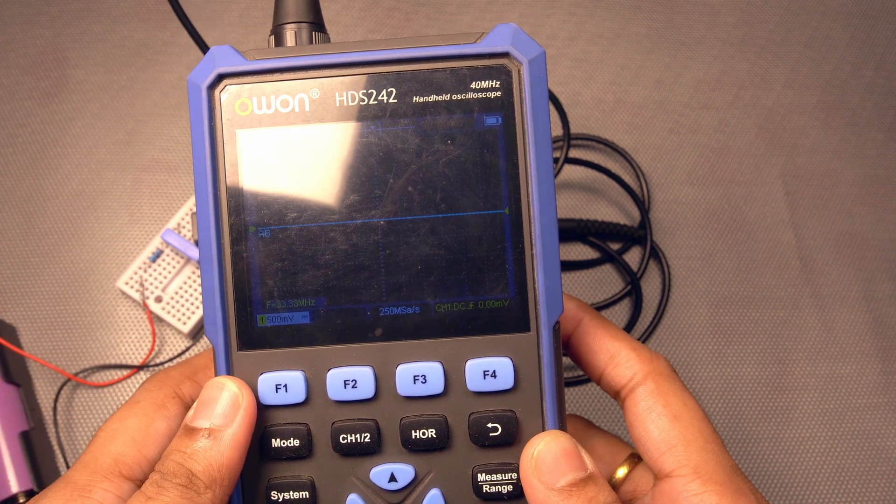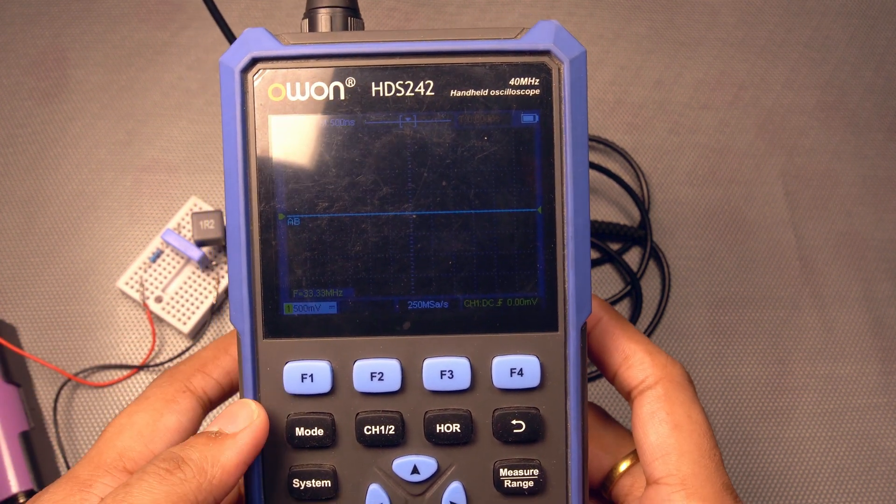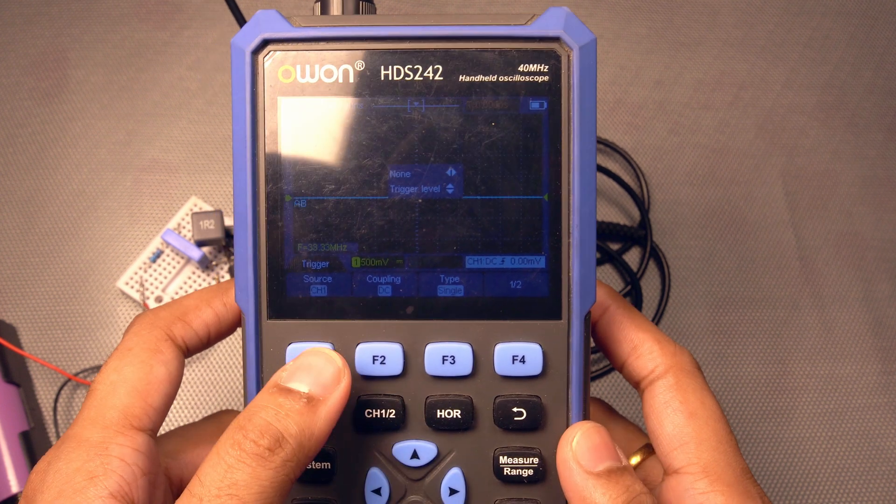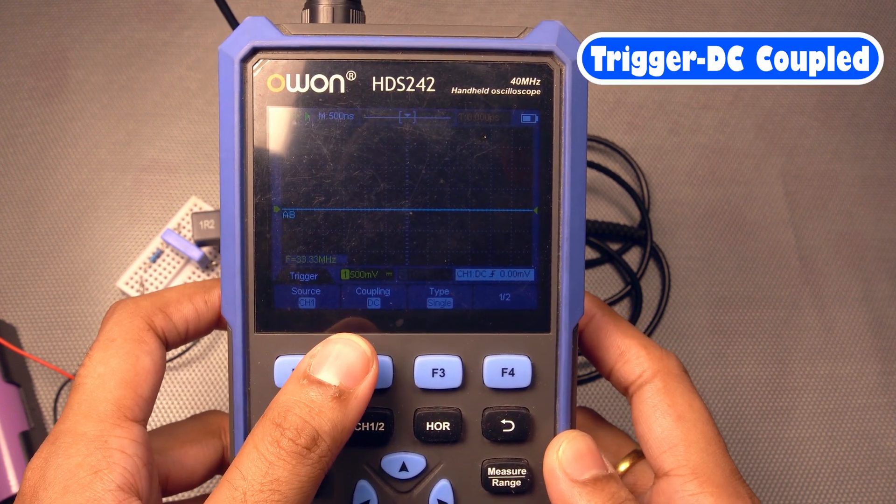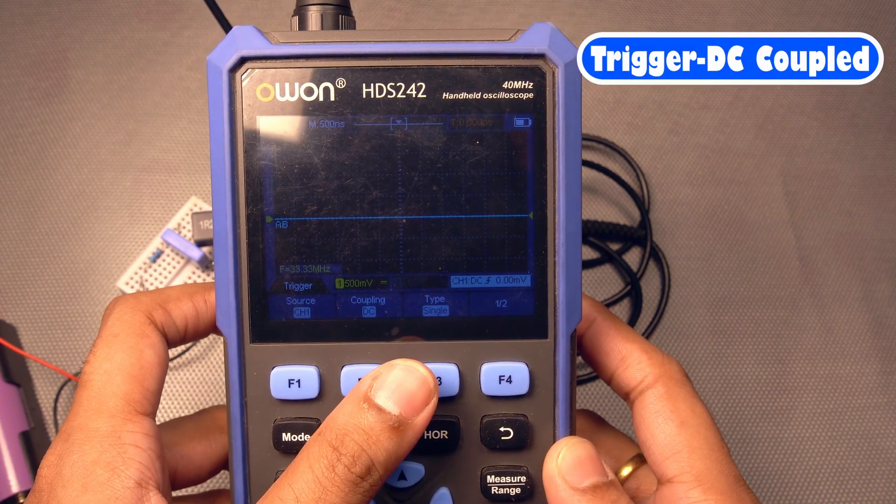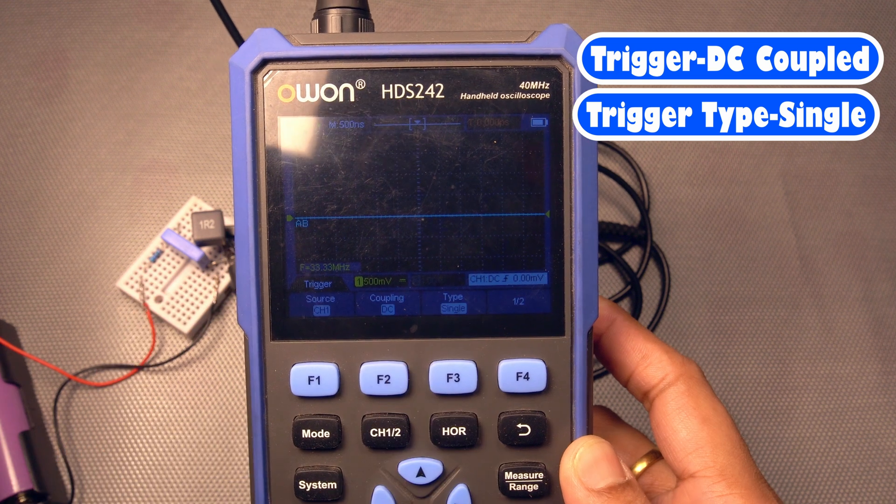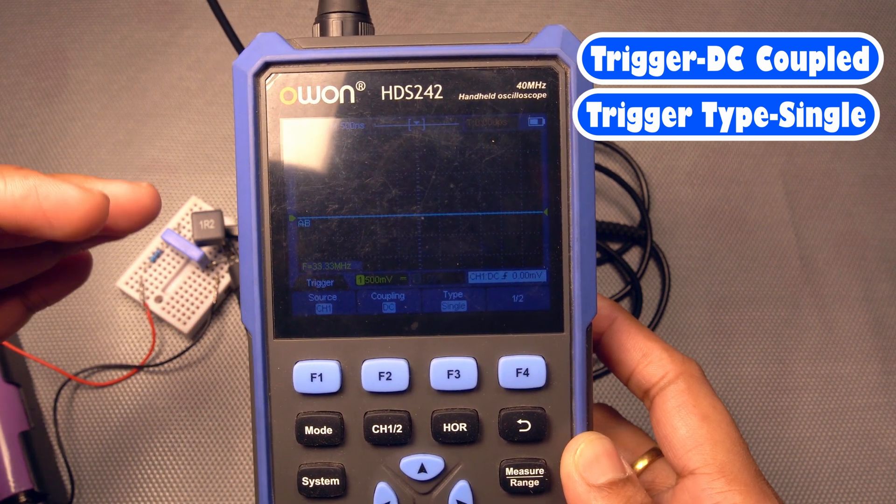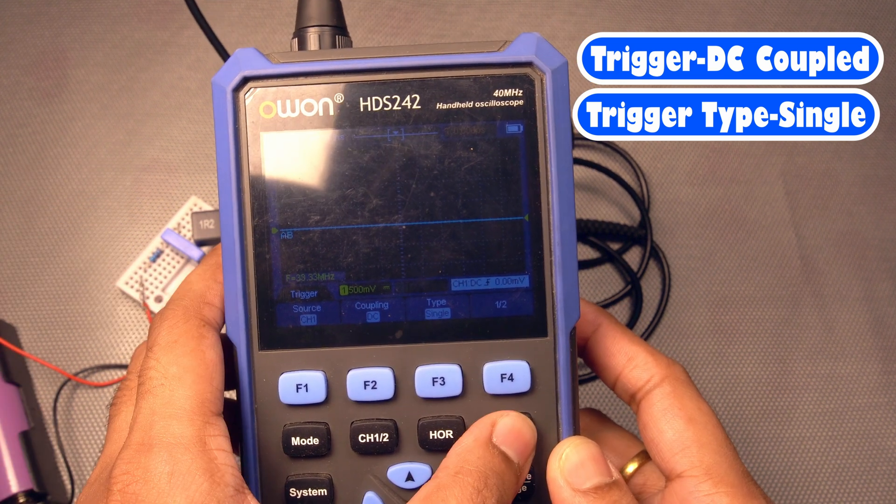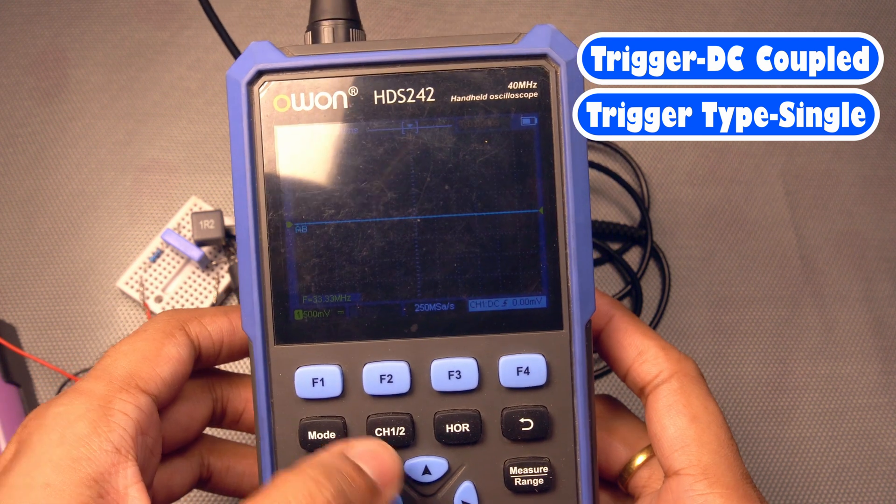So first thing, what we need to do is, we need to set the trigger. The trigger should be in DC coupled mode and the type should be single. So we will measure the burst of the oscillation that comes and then we have to set the trigger level